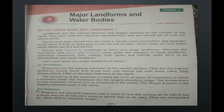All of you have seen mountains. Mountains are the natural elevation on the earth's surface. They are the highest landforms, usually found with a broad base and conical top with steep sides. Mountains occupy almost one-fourth of the total land area of the earth. The pointed tip of the mountain is called a peak. A series of mountains is called a mountain range. The Himalayas are the longest mountain range. The temperature on mountains remains less compared to the plains. Mount Everest is the highest mountain peak in the world.